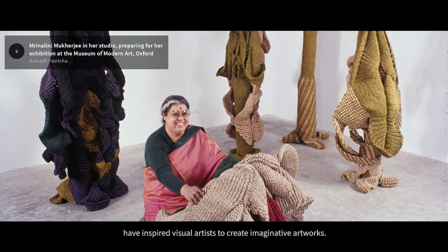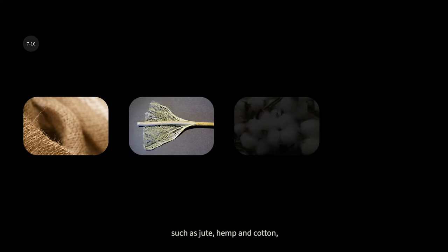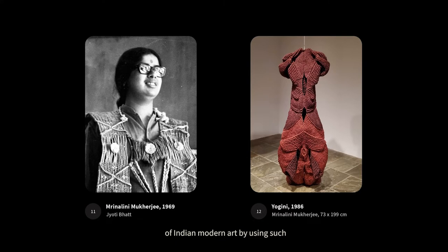The raw materials typically used for textile production have inspired visual artists to create imaginative artworks. Mrinalini Mukherjee was among the first Indian artists to experiment with fibres such as jute, hemp, and cotton, as well as natural ropes, which she chemically dyed. As early as the 1970s, Mukherjee radically expanded the boundaries of Indian modern art by using such unconventional mediums to build robust sculptures.